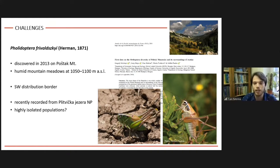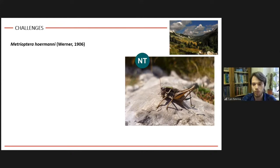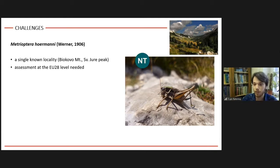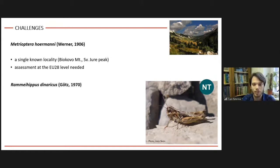Another Dinaric species, Metrioptera hermoni, known as an endemic of the mountains of Bosnia-Herzegovina and Montenegro, was recently recorded on Biokovo Mountain in Dalmatia — the first finding of this species within the borders of the European Union. This means it must be reassessed at the EU level, but it is not expected to have a wide distribution in Croatia since we lack mountains with high enough elevations to provide suitable habitats, and this population could also be rather isolated.